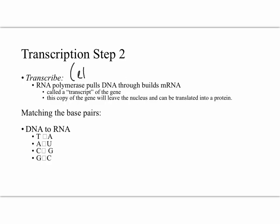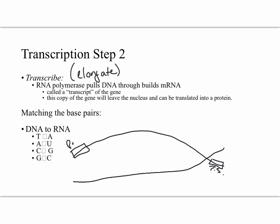The second step of transcription is to transcribe. This is sometimes called elongation. Remember our DNA strand has been unwound just a little bit. Our RNA polymerase which started at that promoter section of the gene is now moving down the DNA. As it goes, RNA polymerase will read the DNA and create a mRNA molecule using the base pairing rules that we have learned.